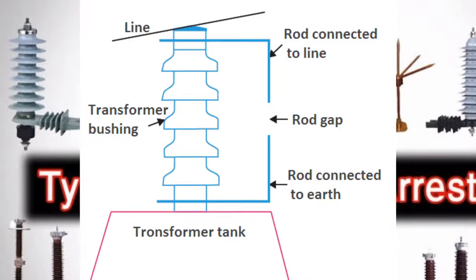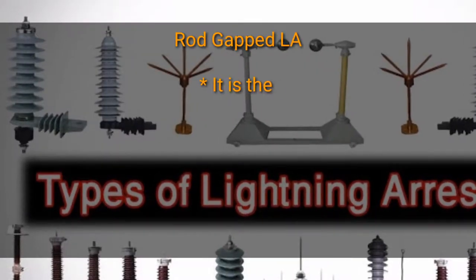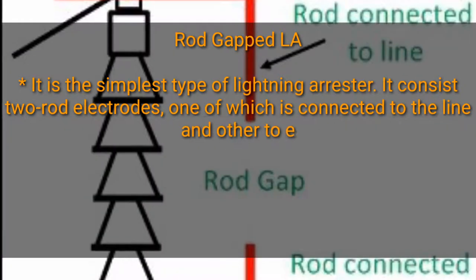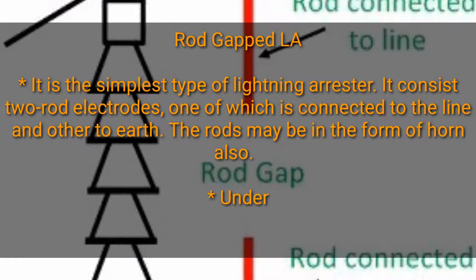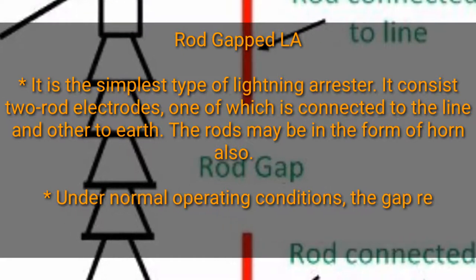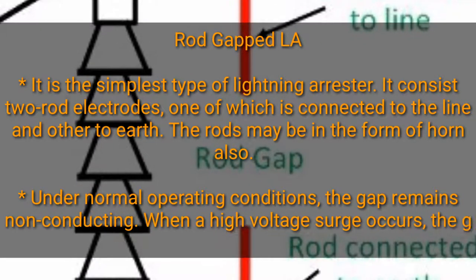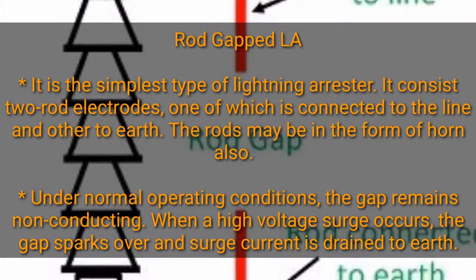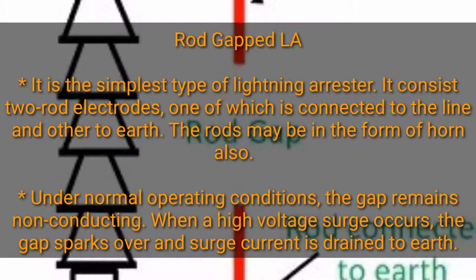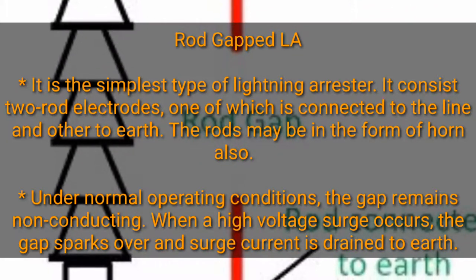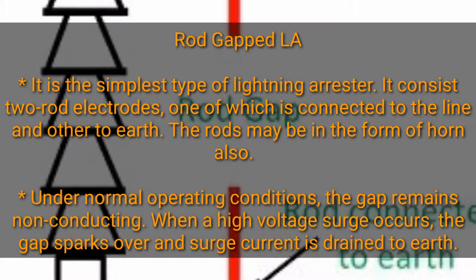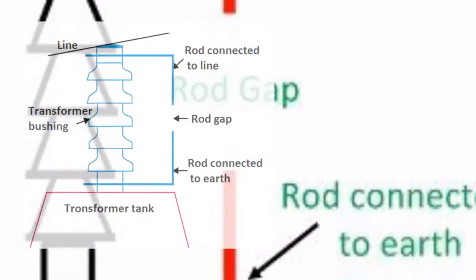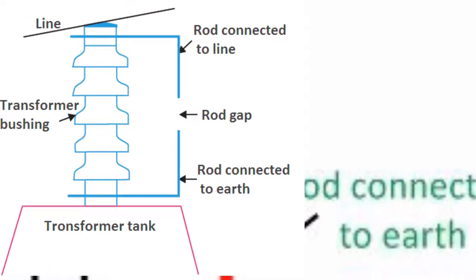Moving on to the rod type lightning arrestor. The rod gap type is the simplest type of lightning arrestor. It consists of two rod electrodes, one of which is connected to the line and the other to earth. The rods may also be in the form of a horn. Under normal operating conditions, the gap remains non-conducting. When a high voltage surge occurs, the gap sparks over and the surge current is drained to earth.